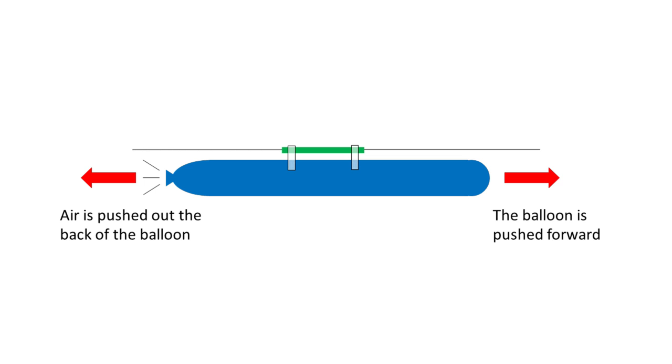According to Newton's third law of motion, for every action there is an equal and opposite reaction. This means that when air is pushed out the back of the balloon, the balloon is pushed forward along the string.